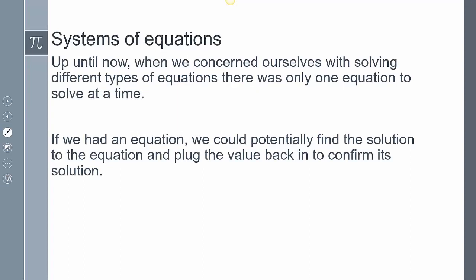Up till now, we have concerned ourselves with solving different types of equations, and there was only one equation to solve at a time. If we had an equation, we could potentially find the solution and plug the value back in to confirm it. An example of that would be like 3x plus 2 equals 9 — we could find x, plug it back in, and confirm whether that value actually equals 9.